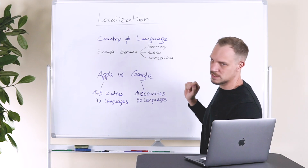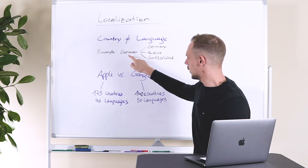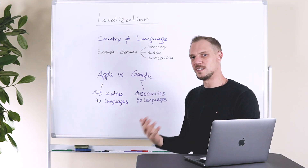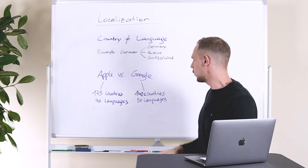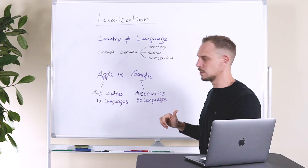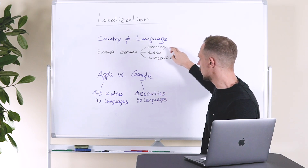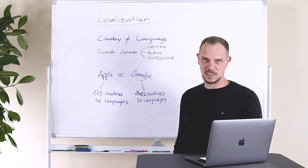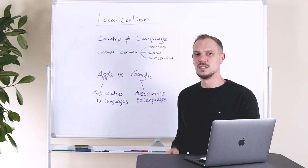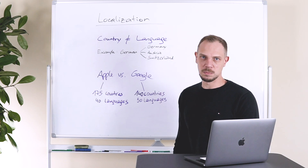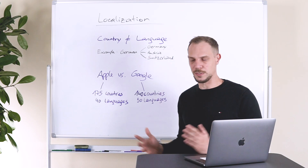Here's one example: if we look at the language of German, we can see that German is spoken in three different countries — Germany, Austria, and Switzerland. It is really important to understand that one language can have an impact on multiple countries.